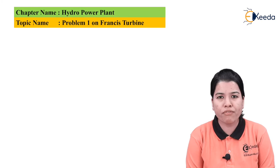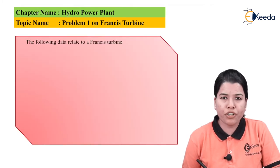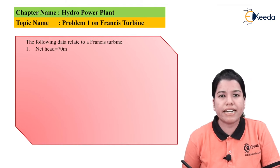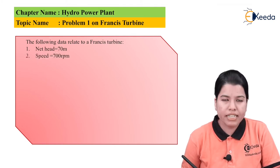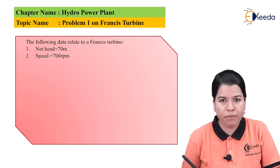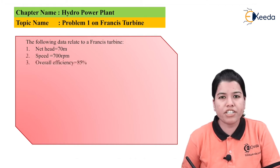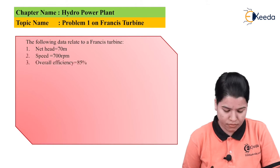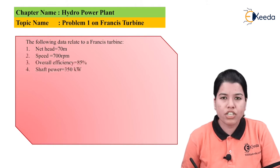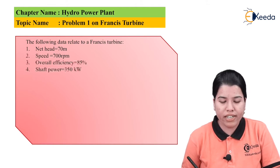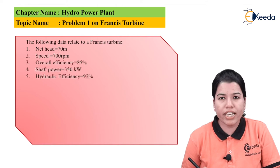Problem 1 on the Francis turbine: the following data relate to a Francis turbine. Net head is equal to 70 meters. Speed is equal to 700 rpm. Overall efficiency is 85%. Shaft power is 350 kilowatt. Hydraulic efficiency is 92%.